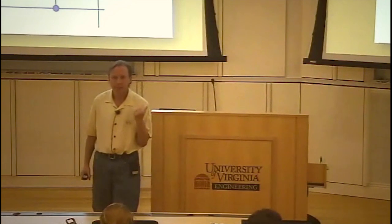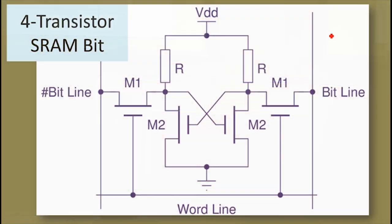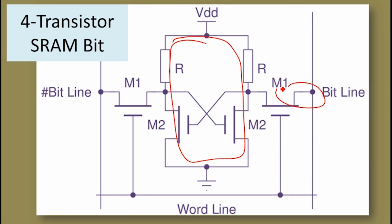You can build an SRAM with as few as four transistors for each bit. You need that loop, and then you need ways of actually reading and writing to it. Very little silicon is needed for each bit in an SRAM, and it's very fast.